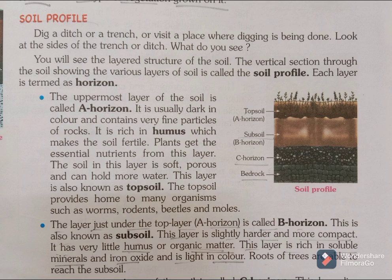The uppermost layer is called the A horizon. Its color is dark. It contains small rock particles. This layer is very fertile in the soil. Plants get essential nutrients for growth from this layer. This layer is very soft and porous.